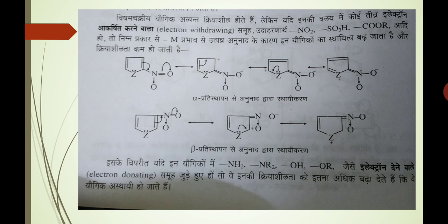Heterocyclic compounds zyada kriyasheel hote hain, lekin yadi inki ring mein koi teevra electron-akarshit karne wala strong electron-withdrawing samooh upasthit ho, jaise ki NO2, SO3H, COOH aadi, to phir kya hoga. Minus M prabhav ke kaaran jo resonating structures banenge unke kaaran yogic destabilized ho jaata hai aur phir inki kriyashilata kam ho jaayegi. Yahan par humne dekha ki alpha substitution se jo resonating structures bante hain jo intermediate ban raha hai unka sthirikaran humne darshaya hai, aur beta substitution ke resonance se jo utpanna ho raha hai unki stability ko doosre udaaharan mein dikhaya hai.